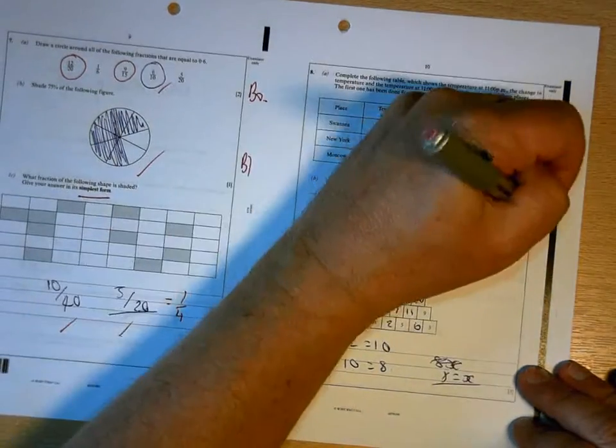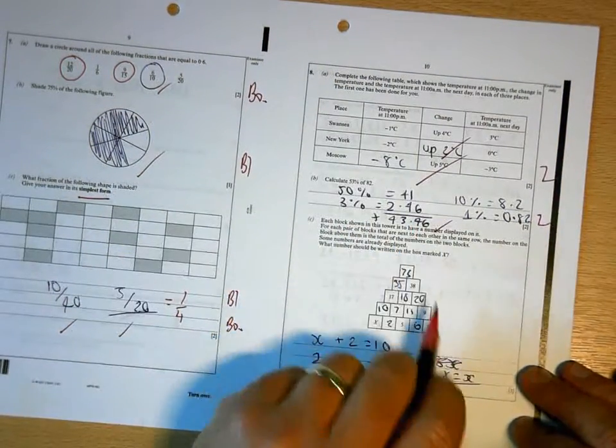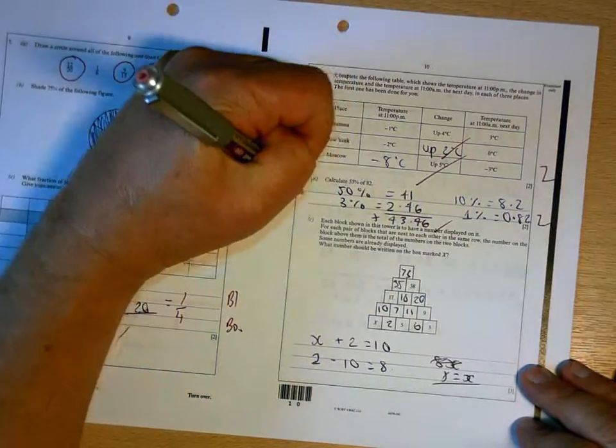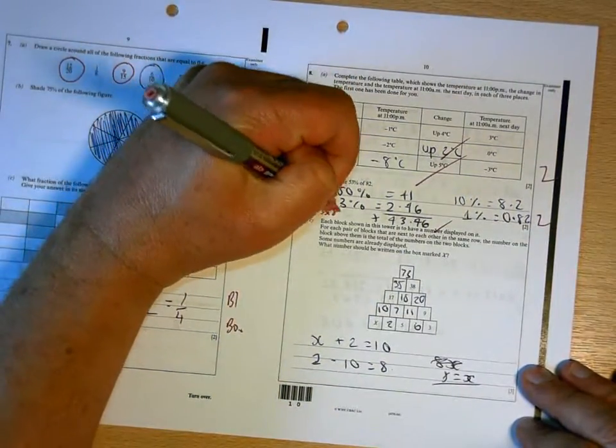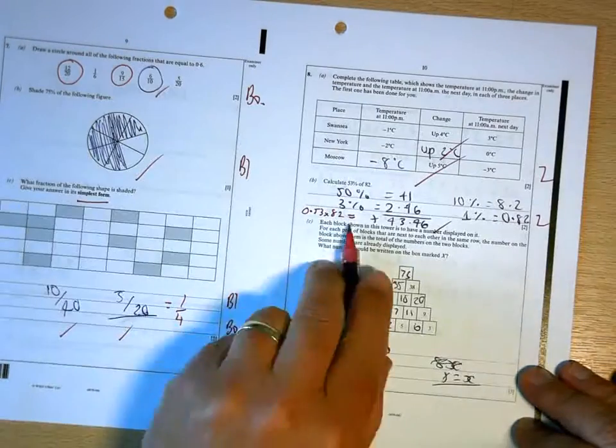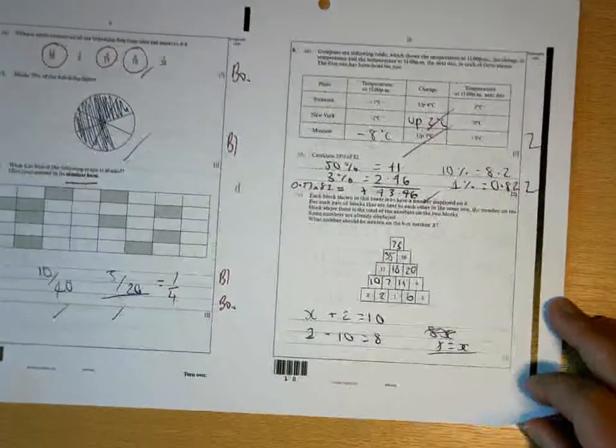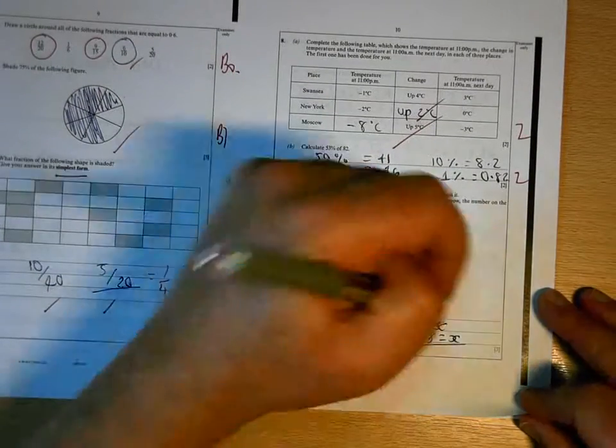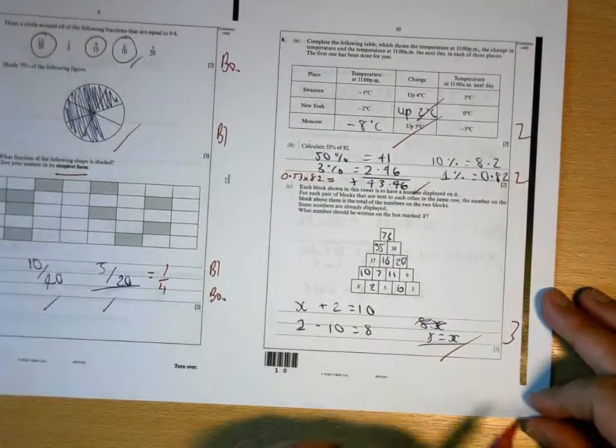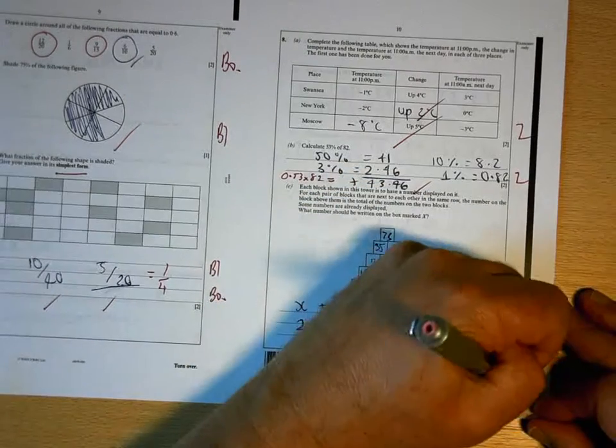43.46 is correct. Again, you can use a calculator, and on your calculator you would just do 0.53 times 82 and work it out. And x is 8, well done. 7 out of 9 for the page.